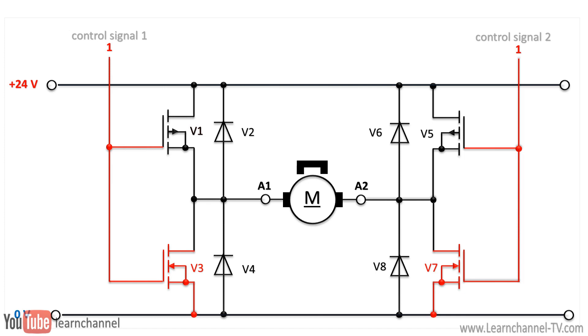The diodes parallel to the transistors fulfill two tasks. On the one hand, they act as freewheeling diodes, since the motor coil represents an inductance at which voltage is switched. On the other hand, large motors can generate a voltage themselves when they are braked. In this case, the diodes now bridge the transistors if the motor acts as a generator.